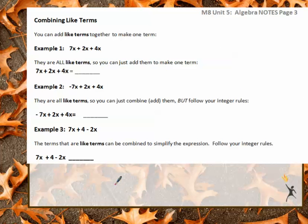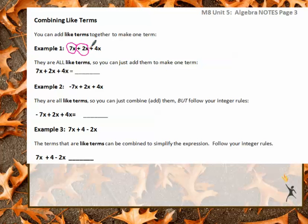Let's talk about combining like terms. You can add like terms together to make them one term. You're welcome to use colored pencils to circle in different colors so you can keep track of your numbers. If we look at the first example, we have 7X plus 2X plus 4X. This is a positive 7X — remember we take the sign. This is a positive 2X because there's a plus sign in front of it, and positive 4X because there's a plus sign in front of it. They are all like terms because they all have X's, so you can just add them to make one term.